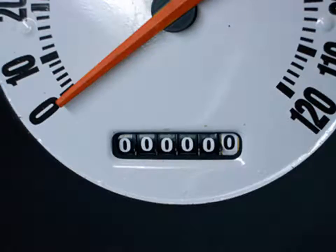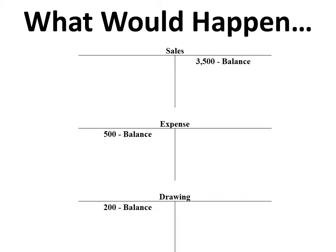Basically what we need to do is we need to reset the odometer. We have different types of accounts — there are permanent accounts and there are temporary accounts. The temporary accounts are going to be your revenue and expense accounts. We need to take those and reset those to zero so we can begin calculating at the beginning of the fiscal period.